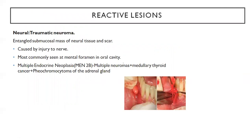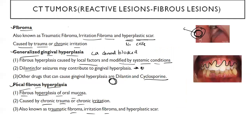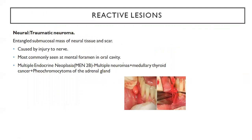Now coming to reactive lesions — we are going to talk about neural lesions. In traumatic neuroma, this will mostly happen when you cause an injury to the nerve. Whenever there is an injury to the nerve, you can see these kinds of lesions. It will look like a mass of neural tissue and there will be a scar. It is mainly caused because of injury to the nerve and is most commonly seen at the mental foramen in the oral cavity.